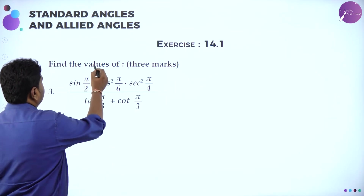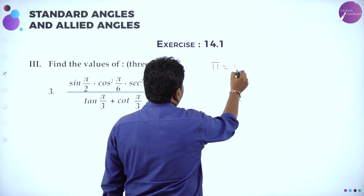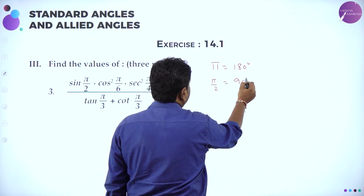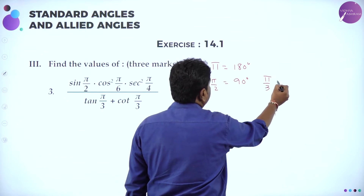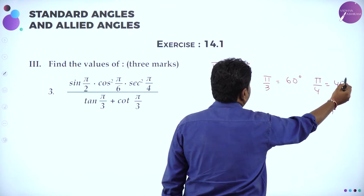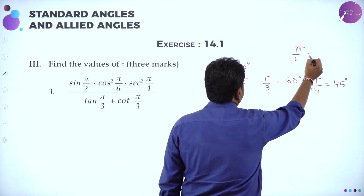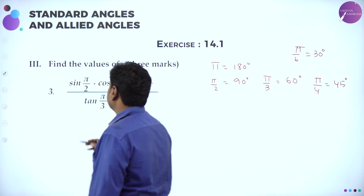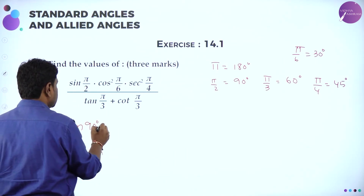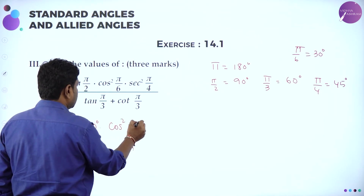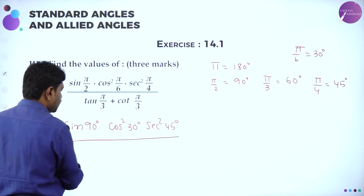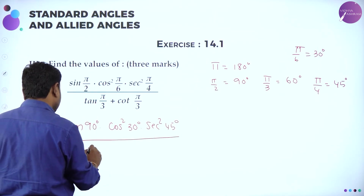Now for problem 3 involving pi notation: sin(π/2) — all of you know π = 180°, so π/2 = 90°; π/3 = 60°; π/4 = 45°; π/6 = 30°. So sin(π/2) means sin 90°. cos²(π/6) means cos² 30°. sec²(π/4) means sec² 45°, divided by tan(π/3) means tan 60°.